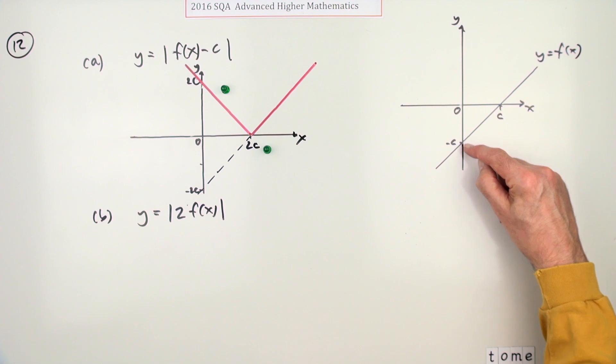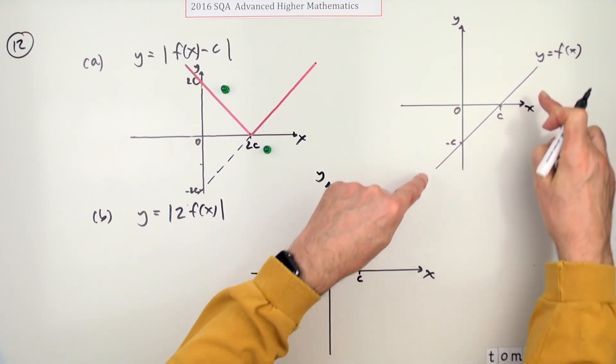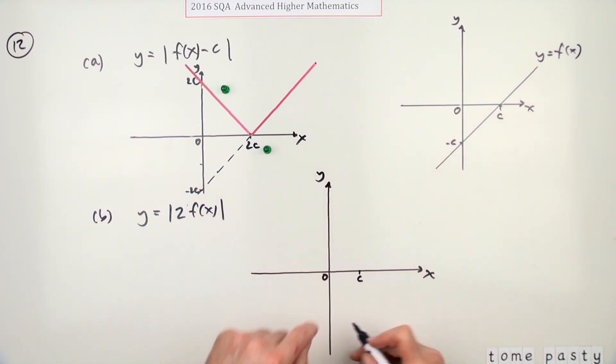But instead of this being here, it'd have to go down to negative 2c. So it'll still pass through c. But this graph would then have gone down through negative 2c as before. Meaning that is the graph of 2 times f of x.